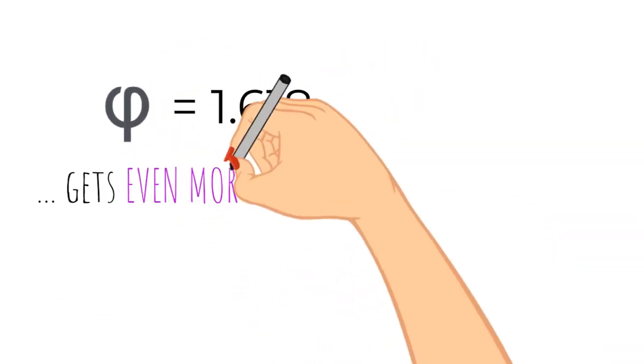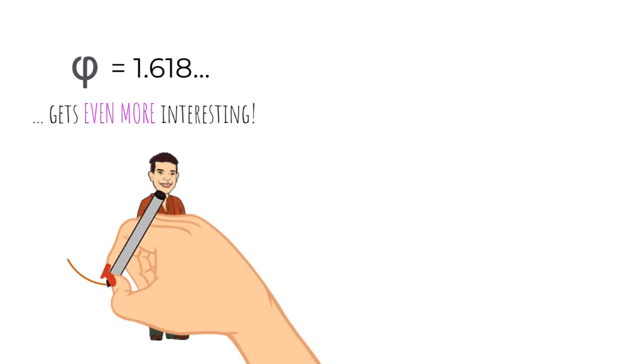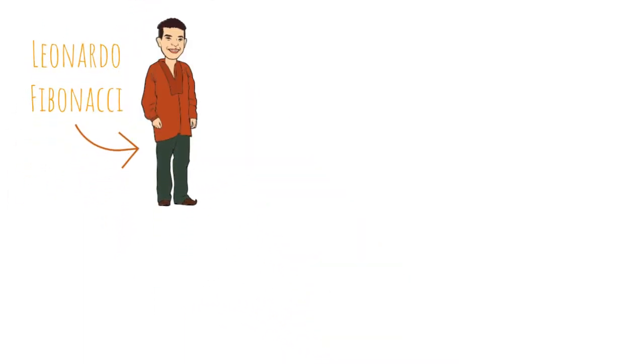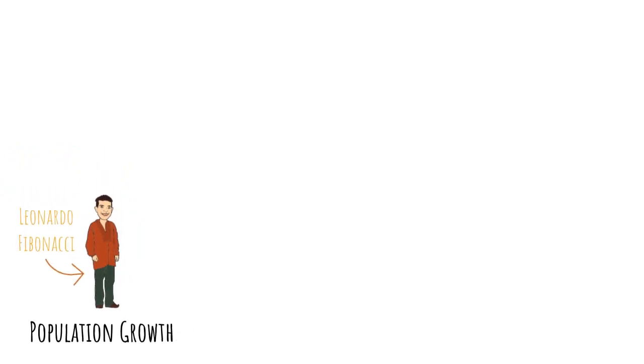This number 1.618 gets even more interesting. Once there was a man called Leonardo Fibonacci and he pondered one day about population growth. He considered what would happen if we start with a pair of baby rabbits and see month by month how the rabbit population would grow.